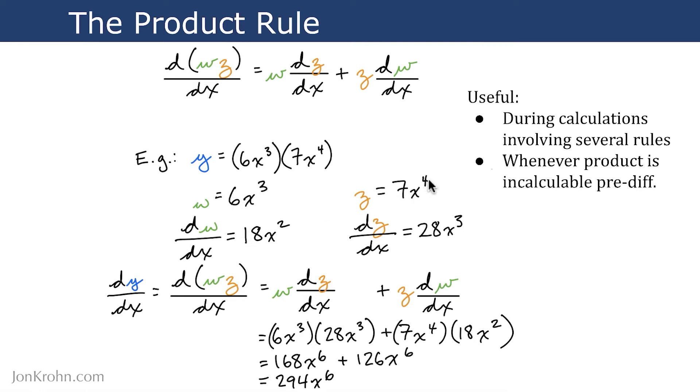7x to the power of 4 is a similar story. We use the power rule and the constant multiple rule. So x to the power of 4 becomes x to the power of 3. We bring the 4 in front. 7 times 4 is 28.